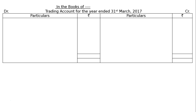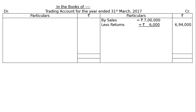Start from the credit side. This is the trading account for the year ended 31st March 2017. By sales Rs. 7,00,000, less returns Rs. 6,000, and in the final column it is Rs. 6,94,000.